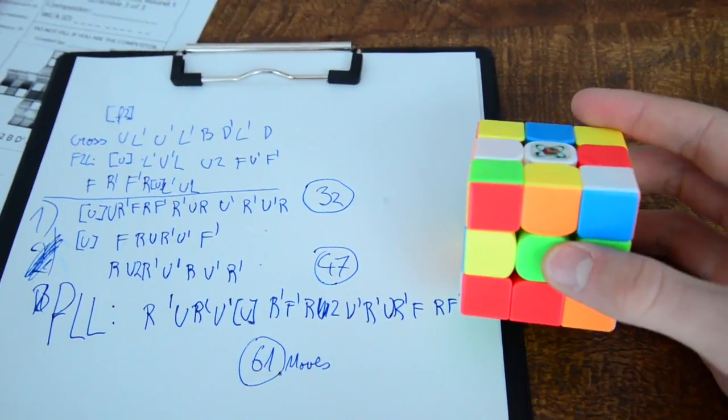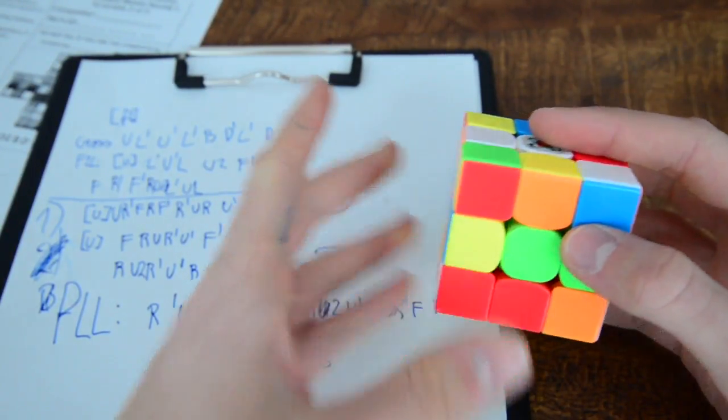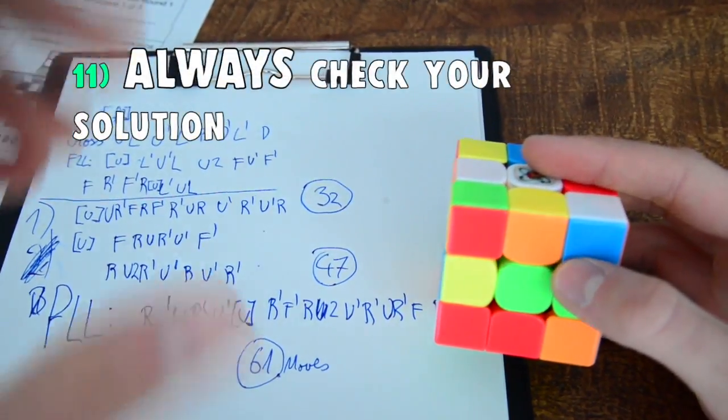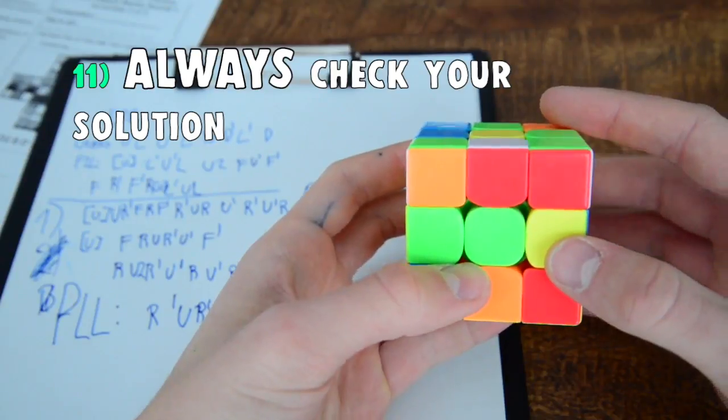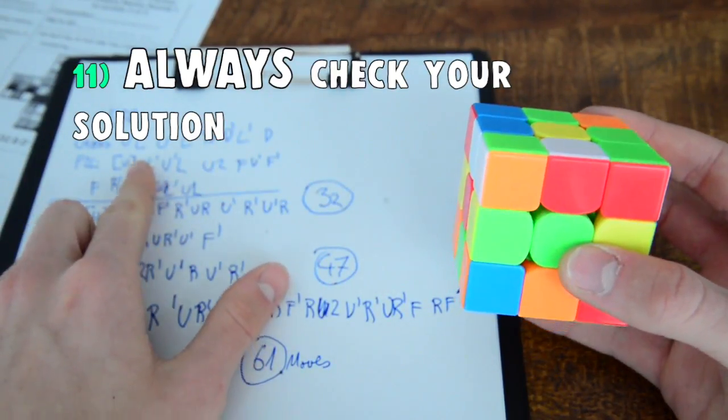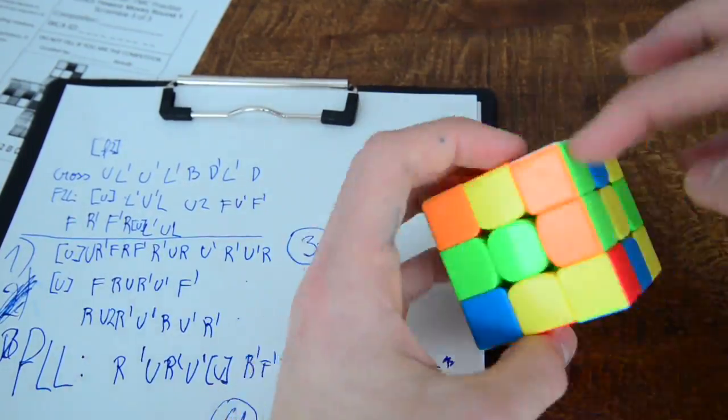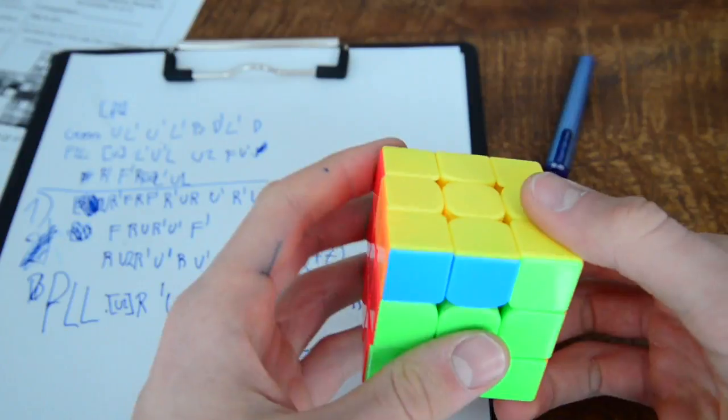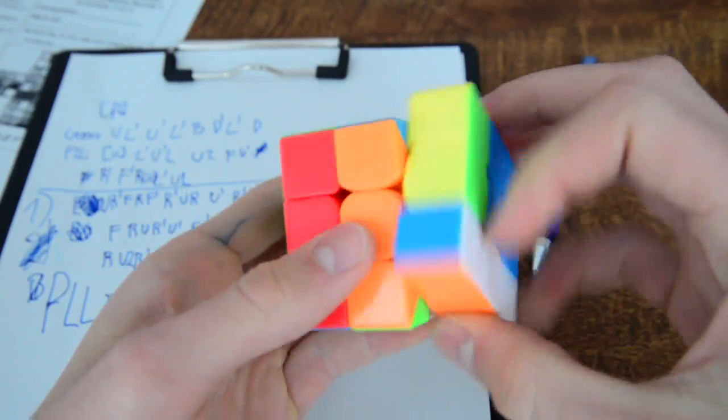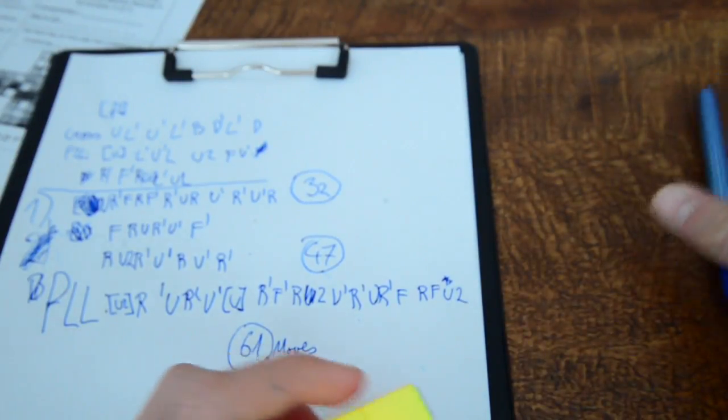So as you can see we always scramble the cube white, green in front, white in the upper layer. So the cross. Okay, so the first rotation is F2. So let's do F2 and let's do the cross U and now we can just do that. And in the end we need to do the AUF by doing U2.